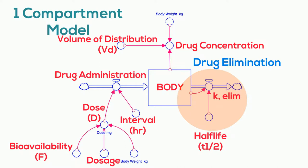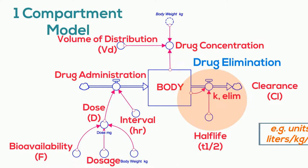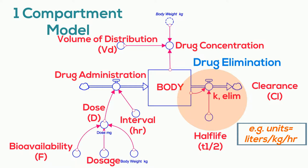A final pharmacokinetic term worth defining here is clearance, which can be visualized as the plasma volume that is cleared of drug per unit of time, with units such as liters per hour or liters per kilogram per hour. In a one-compartment model, it's also equivalent to the product of the elimination rate constant times the volume of distribution. So what does the concentration of a drug look like when plotted using this one-compartment model? The plot of a drug concentration against time would show an exponential curve with the concentration declining over time.